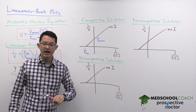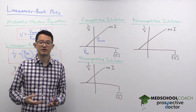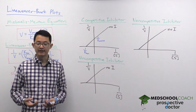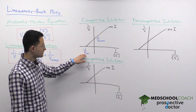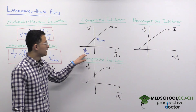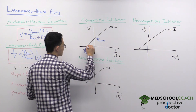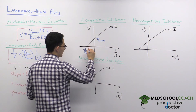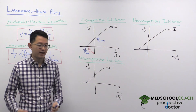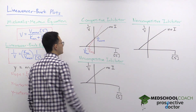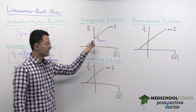Now let's consider what happens if you add a competitive inhibitor. Competitive inhibitors compete directly with the substrate to bind to the active site of the enzyme, decreasing the affinity of the enzyme for the substrate and increasing Km. If Km increases, you're dividing by a larger value, so the magnitude of the x-intercept (negative 1 over Km) shifts closer to zero — meaning the x-intercept shifts to the right. We also know that competitive inhibitors do not affect the maximum reaction velocity, so the y-intercept is unchanged. The result is an increase in slope, a rightward shift of the x-intercept, and no change in the y-intercept.